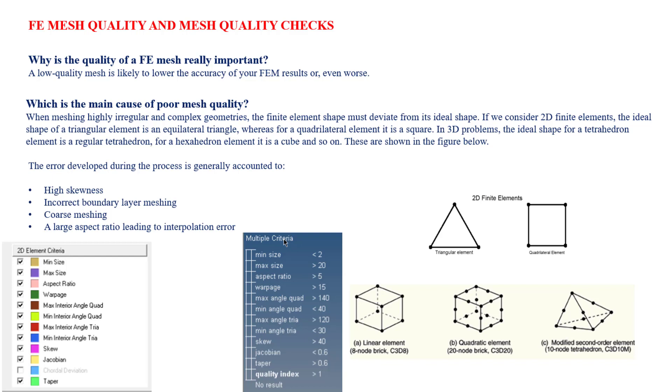Maximum for tria is 120 degrees, minimum is 30 degrees. Skewness should be less than 40 degrees maximum. When it comes to Jacobian ratio, we should maintain 0.5 to 0.6. Taper is also the same thing, 0.6. These are the scenarios we need to consider.